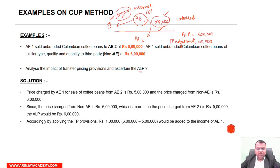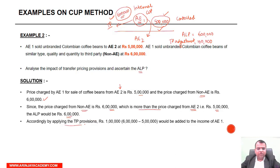Price charged by AE-1 for sale of coffee beans is rupees 5,00,000 from AE-2 and rupees 6,00,000 from non-AE. Since the price charged from non-AE — rupees 6,00,000 — is more than the price charged from AE-2 — rupees 5,00,000 — the ALP will be the higher of the two, which is rupees 6,00,000. Therefore, by applying the TP provision, rupees 1,00,000 adjustment — that is, price from non-AE minus price from AE — will be added to the income of AE-1.